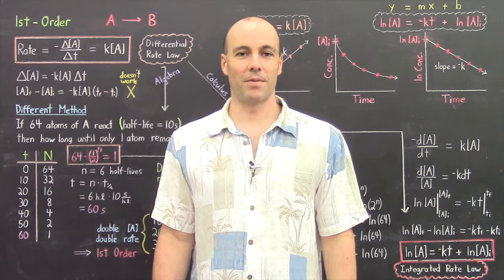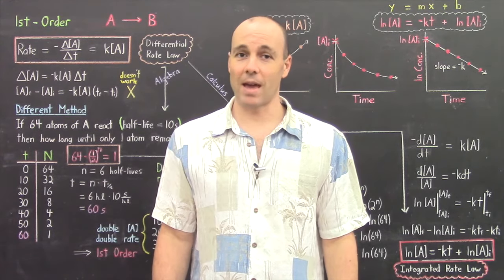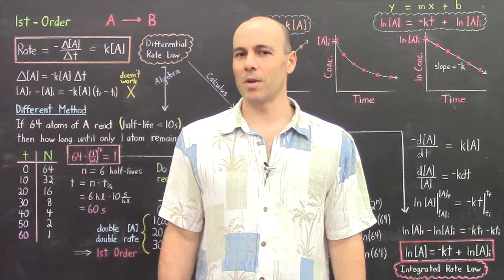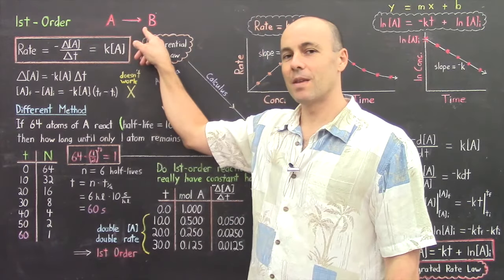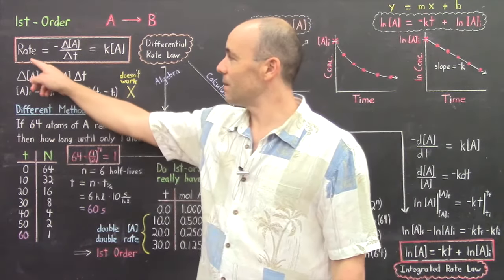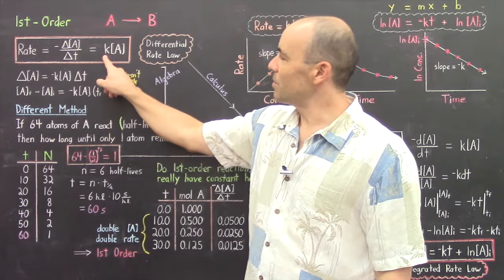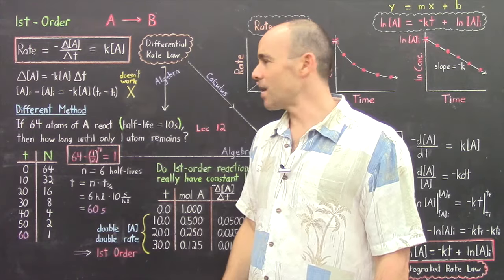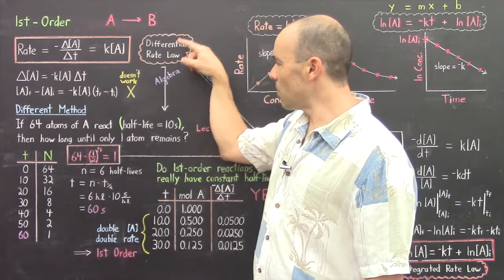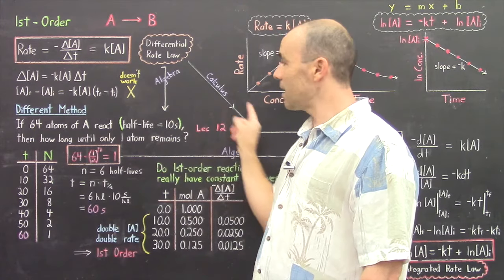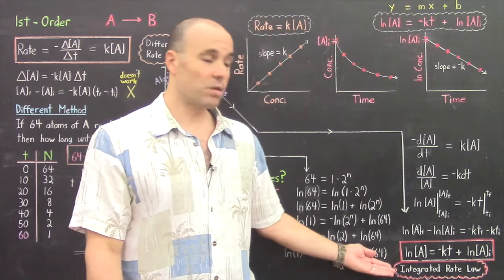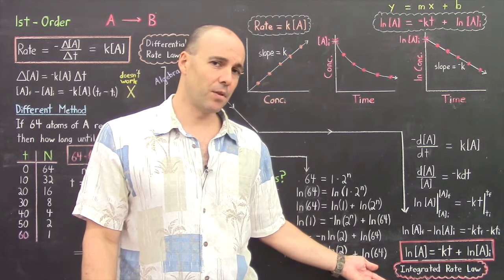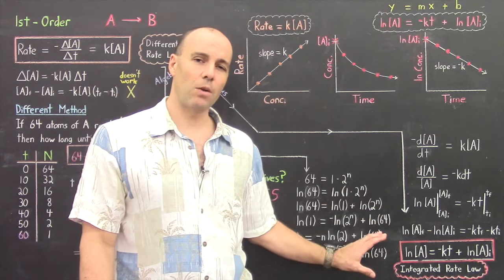Deriving the integrated rate law for a first-order reaction is more tricky if we use an algebraic derivation versus a calculus derivation. Nevertheless, we're going to do both. Starting with our generic reaction A forms B, the differential rate law is rate equals the rate constant times the concentration of the reactant raised to the first power. We're going to take this differential rate law and, using both an algebraic derivation and a calculus derivation, obtain the corresponding integrated rate law for a first-order reaction.